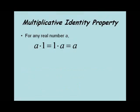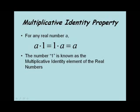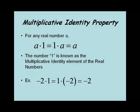Now let's look at the multiplicative identity property. This says for any real number a, a times 1 equals 1 times a, which equals a. The number 1 is the multiplicative identity element of the set of real numbers. For example, negative 2 times 1 equals 1 times negative 2, which equals negative 2.